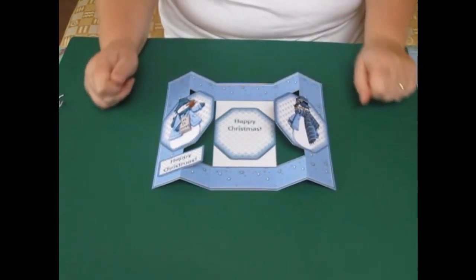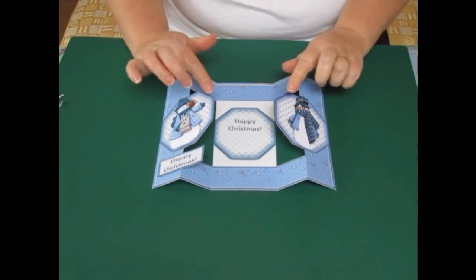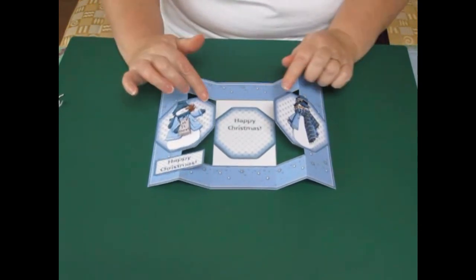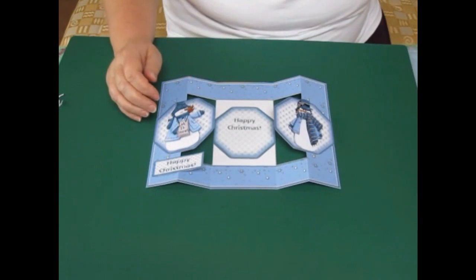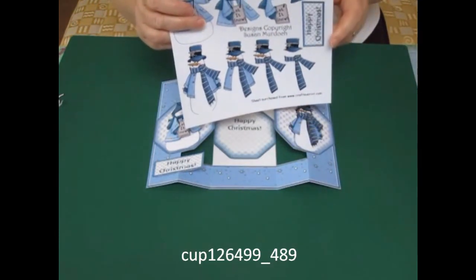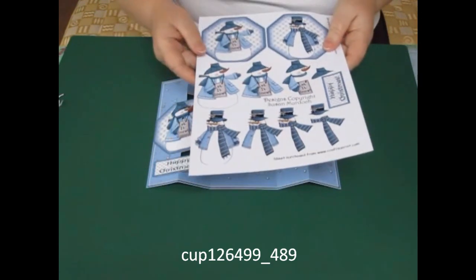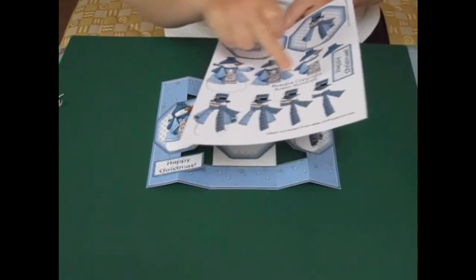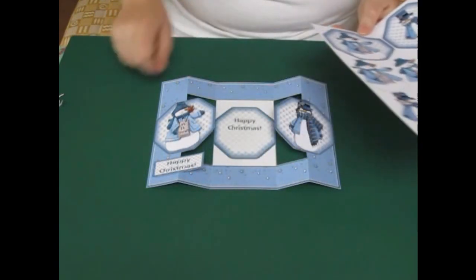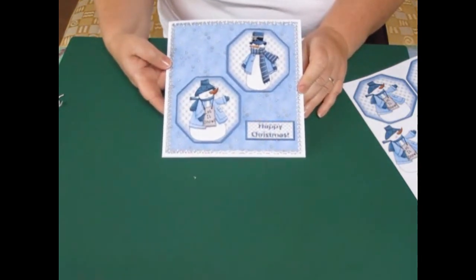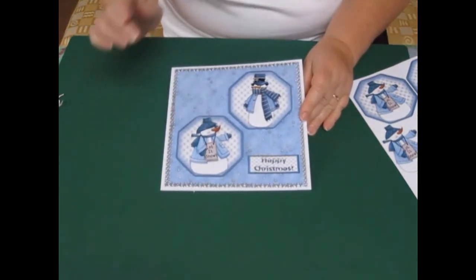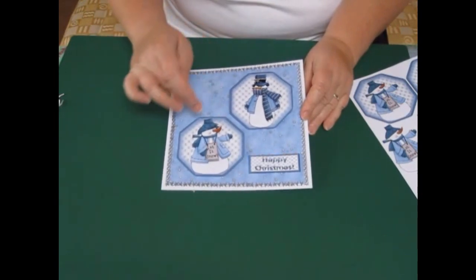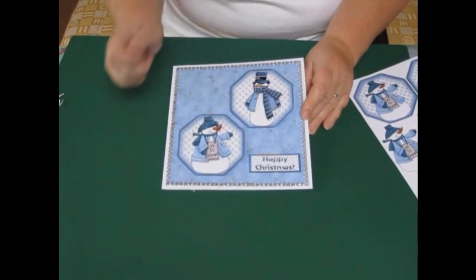Now, as I was saying about these toppers, I used all the decoupage layers and the base panel of this sheet. Cup number 126499-489. I could have not used the panels. And I could have used every other layer. And then I could have made two different toppers. Which I've done in this card. This is a card made from that sheet with the backing panel. And just a couple of the layers of decoupage and the greeting panel.